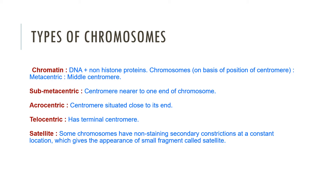On the basis of centromere position, chromosomes are of four types: metacentric, submetacentric, acrocentric, and telocentric. In metacentric, the centromere is at the center. In submetacentric, the centromere is close to the center. In acrocentric, the centromere is near the end. In telocentric, the centromere's position is terminal.